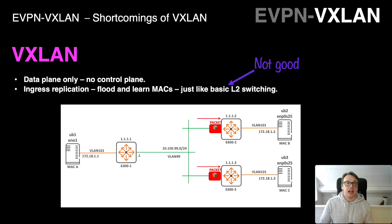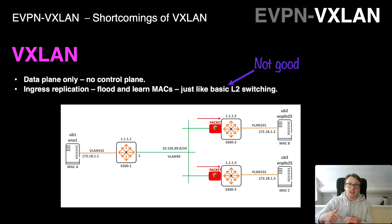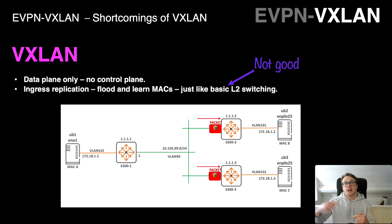The shortcoming of VXLAN is that it doesn't have a control plane — it's data plane only. It works like basic layer 2 switching: if it receives a frame destined for an unknown MAC address, it floods it out to all available peers within the VPN and hopes to hear back. If it does, it records that information in its layer 2 switching table. This is flood and learn — not good because it doesn't scale and it's generally inefficient. For a much more detailed explanation, check out the VXLAN explainer playlist linked on screen.